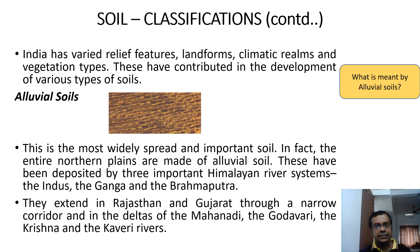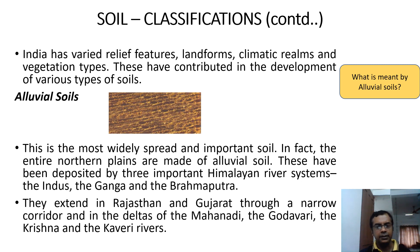India has varied relief features, landforms, climatic realms, and vegetation types, which have contributed to the development of various types of soils. What is meant by alluvial soil? It is the first classification of soil found in India. Alluvial soil is the most widely spread and important soil in our country. In fact, the whole northern plains are made up of this type of soil. They have been deposited by three important Himalayan river systems: the Indus, the Ganga, and the Brahmaputra.